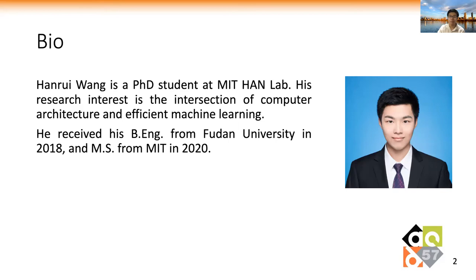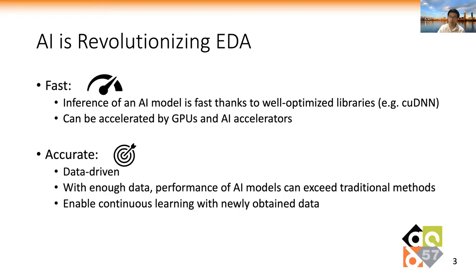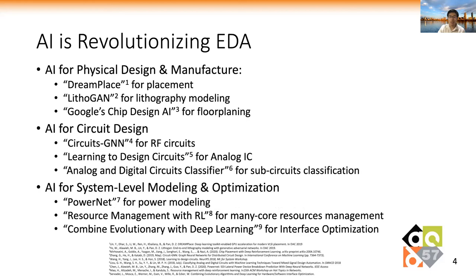Recently, artificial intelligence is witnessing rapid progress and shows promising results in the EDA area because of two merits. First, the inference of a model is very fast and can be accelerated by GPUs and accelerators. Secondly, models are very accurate because they are data-driven. With enough data, the performance of AI models can exceed traditional methods. It also enables continuous learning to make full use of newly obtained data. AI models are already used in many EDA problems, including physical design and manufacture, circuit design, and system-level modeling and optimization.